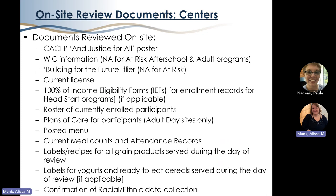For center programs, we'll review several items on site. We look to ensure that you've hung the required postings in a prominent place where parents and participants can see them when they enter your center. All programs need to post the And Justice for All poster. We'll be looking for current WIC info for everyone except at-risk after-school programs and adult programs, and the Building for the Future poster for everyone except at-risk after-school programs. We'll also check that your license is posted if you're required to be licensed. For programs that enroll participants, we'll look at income eligibility forms or enrollment records for all your sites, not just the sites we're visiting.